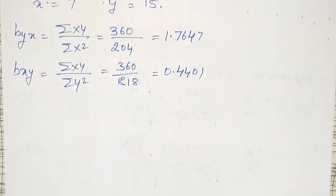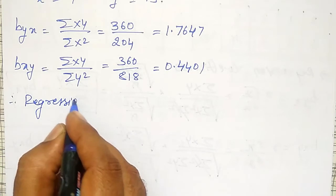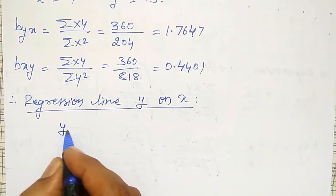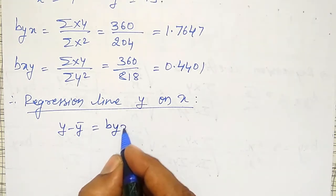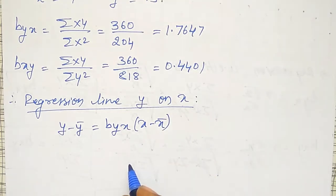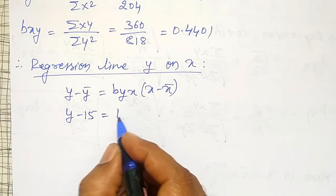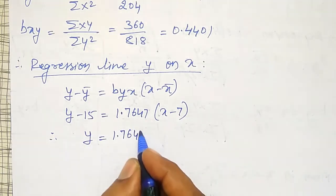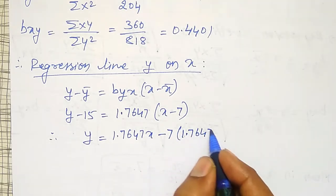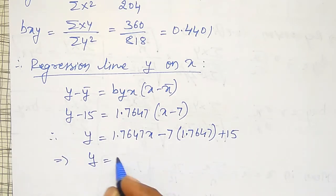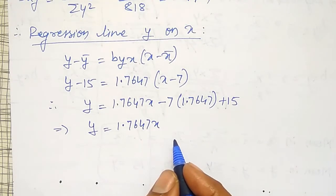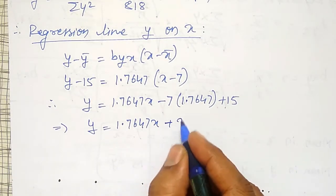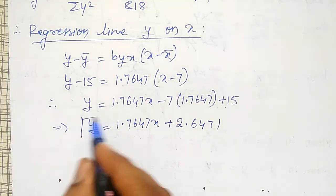Using these, I will write the regression lines. Therefore, regression line y on x is: y minus ȳ equals byx times (x minus x̄). That is, y minus 15 equals 1.7647 times (x minus 7). Therefore, y equals 1.7647x minus 7 times 1.7647 plus 15. Simplifying, the regression line y on x is y = 1.7647x + 2.6471.